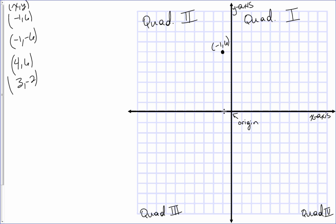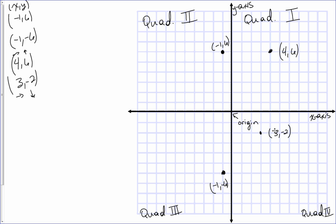For negative one, negative six: we go left one, then instead of going up we go down six. That is negative one, negative six. For four, six: go right four, then up six. For three, negative two: go right three, then down two. Remember, your x value always comes first — positive means go right, negative means go left. Your y value is always last — positive means go up, negative means go down.